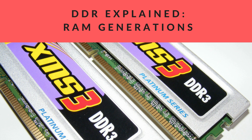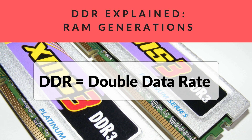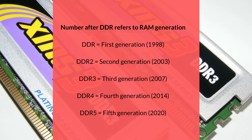Now let's get on to RAM generations. When you're shopping for RAM, you'll notice they're classified as DDR2, DDR3, DDR4, and so on. These labels refer to the generation of the RAM. DDR stands for Double Data Rate, which refers to the ability of DDR RAM to complete two transfers per clock cycle. This is the technology modern RAM sticks are based on. Whenever this technology is significantly improved upon in terms of performance and speed, that marks a new generation.